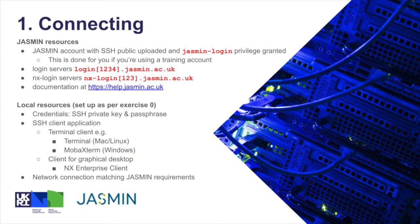There are some resources which we'll need for this exercise. The first being a Jasmine account with an SSH public key already uploaded and the Jasmine login privilege already granted. That's something you'll need to do via the Jasmine accounts portal. If you're using your own account you will need to sort that out before attempting this exercise. If you're doing it as part of one of the in-person workshops there are training accounts which have these things set up for you. You'll also need access to the login servers — there's a list here, but always check the documentation at the link given for the current list.